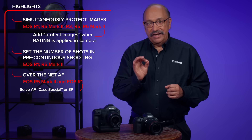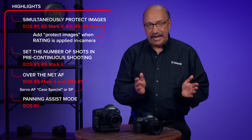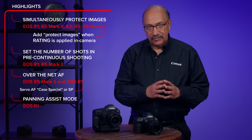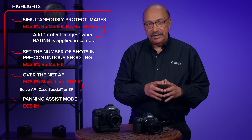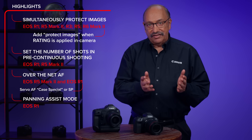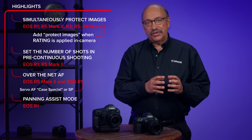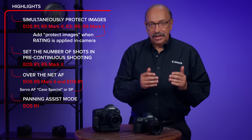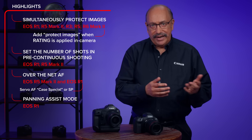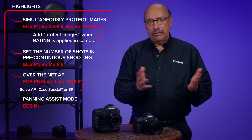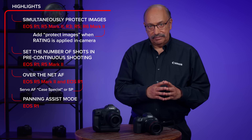Panning Assist is a nice addition for smoother, more consistent panning results. It leverages the in-body stabilization to detect and stabilize panned subjects. This has the potential to really help action shooters, especially in fields like motorsports, birds in flight, and even general sports shooting when a deliberate panned look is desired.